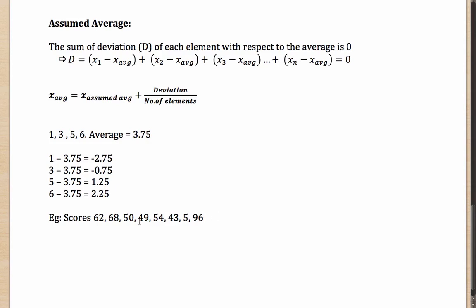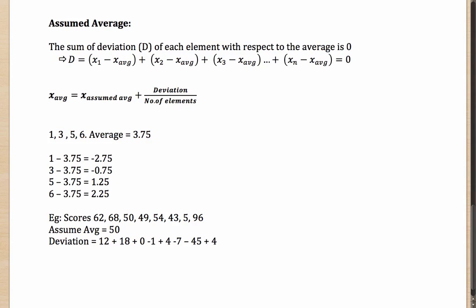To calculate the average for all 8 values, you could add them and divide — that is one method. Using the assumed average method, let's say I assume the average to be 50. I now look at the total deviation from 50: 62 minus 50 is plus 12, 68 minus 50 is plus 18, 50 minus 50 is 0, 49 minus 50 is minus 1, 54 minus 50 is plus 4, 43 minus 50 is minus 7, 5 minus 50 is minus 45, and 96 minus 50 is plus 46. These are the total deviations from the assumed average of 50.